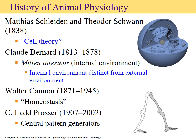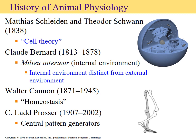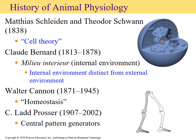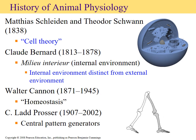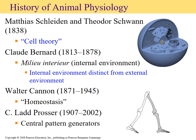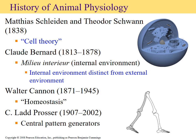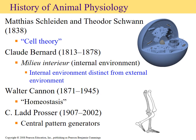Homeostasis is sort of like internal consistency — it is all the different ways that our body regulates things like internal temperature and internal pH, regardless of the environment we're placed in. Homeostasis is essential because it allows organs not only to thrive and function at maximum capacity, but is also important for the overall well-being of the body.